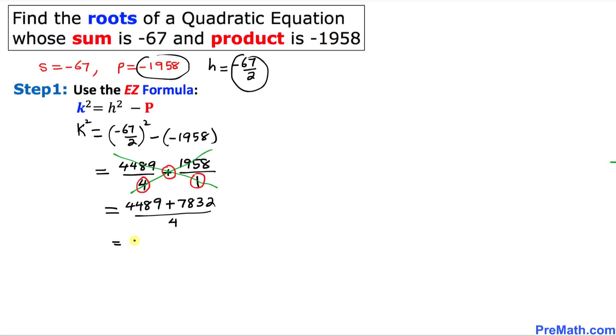Let's add these numerators that is going to give us 12321 divided by 4. That is equal to K square. Since we want to solve for K, I am going to take the square root on both sides. So K turns out to be positive or negative 111 divided by 2 and that is our K value.